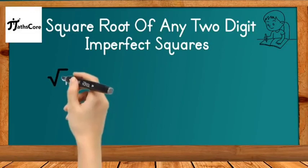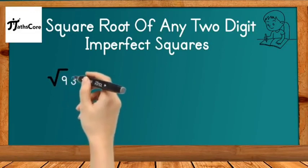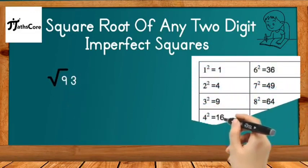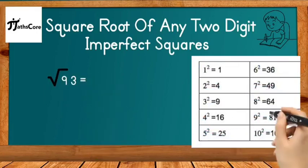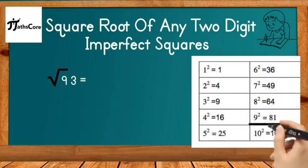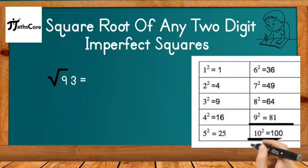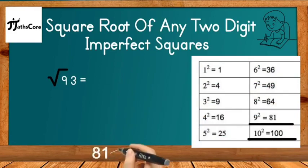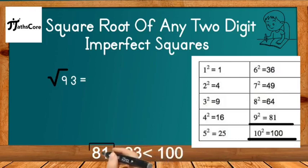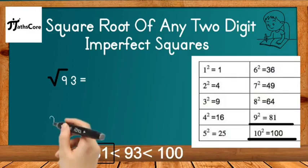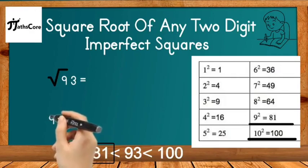Now let's take one more example: the square root of 93. Find between which two perfect squares 93 lies. 9² = 81 and 10² = 100, so 93 lies between 81 and 100. Select the lesser perfect square, which is 81. The square root of 81 is 9, so write down 9.